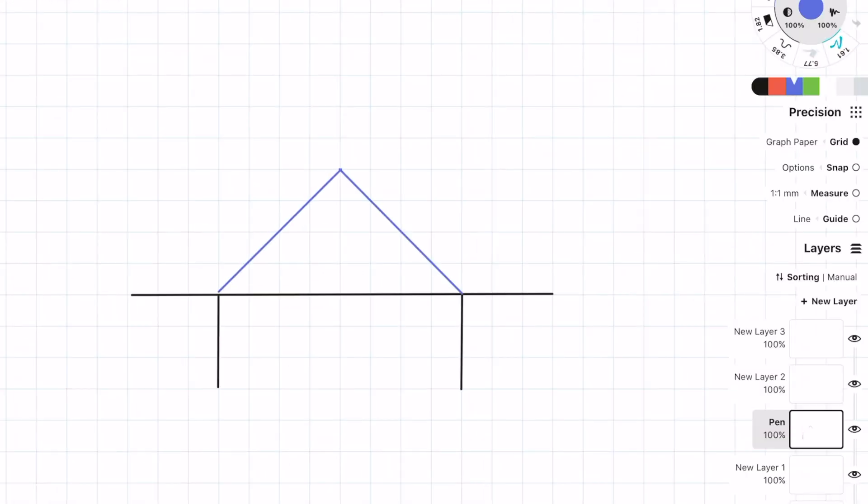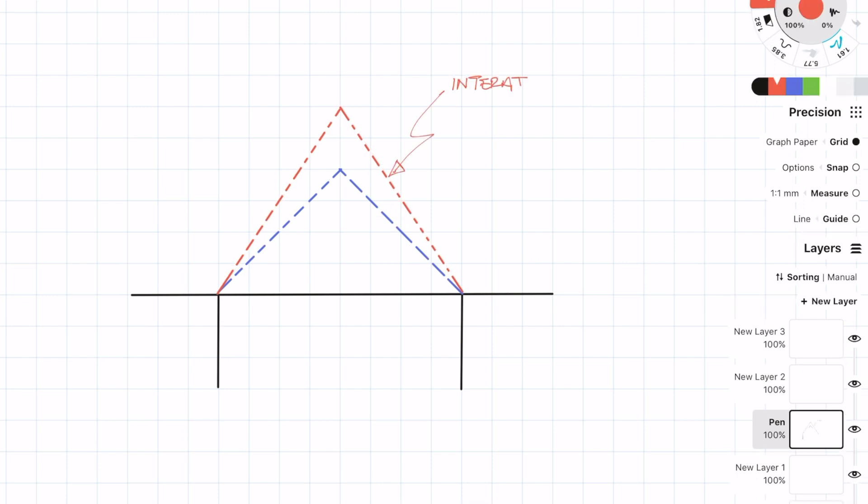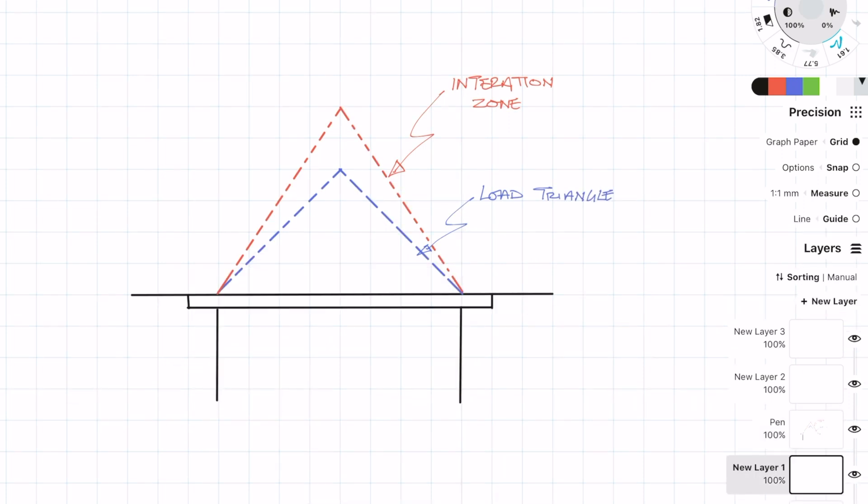So in lintel design there's two things you really need to know. One is called the interaction zone and the other is called the loaded triangle. So the loaded triangle is at a 45 degree angle from where the opening ends. Only the self weight of the masonry needs to be considered when you're looking at the loaded triangle. Half of any point or distributed load applied to the masonry within the interaction zone is carried by the lintel at 60 degrees.